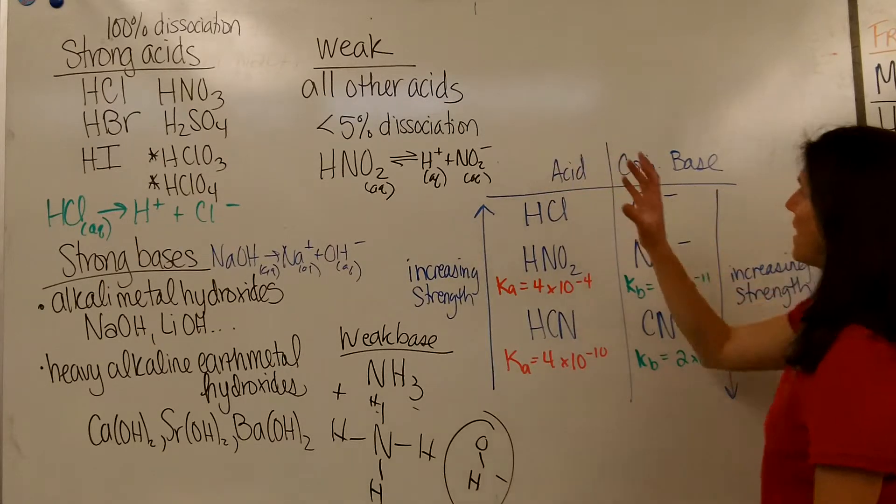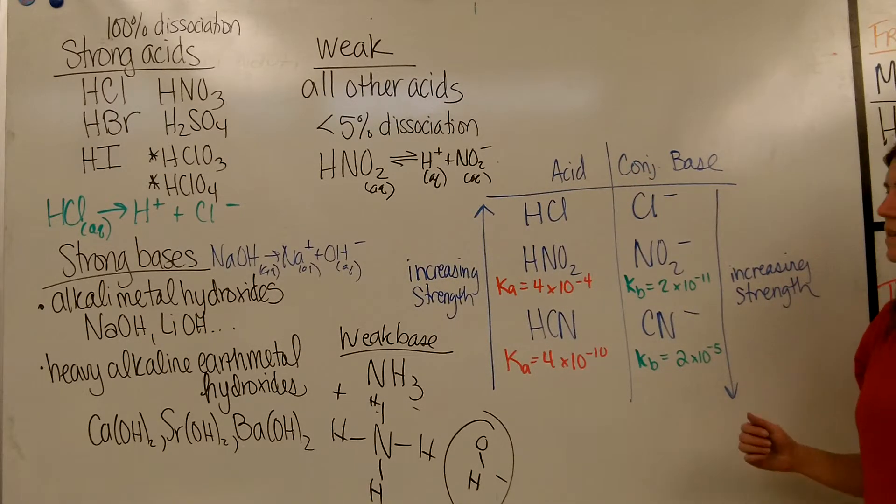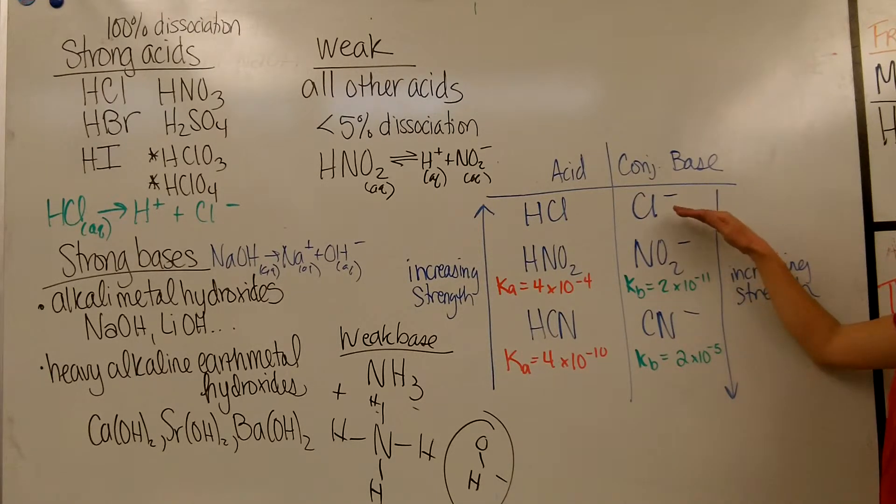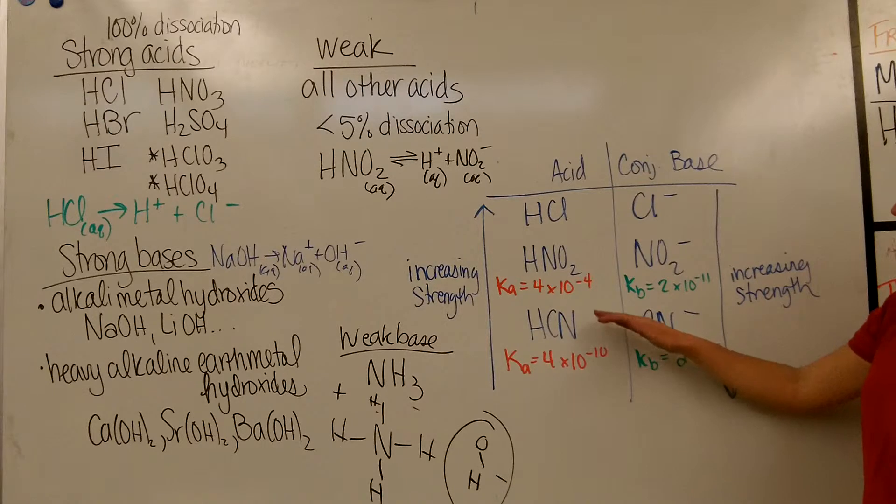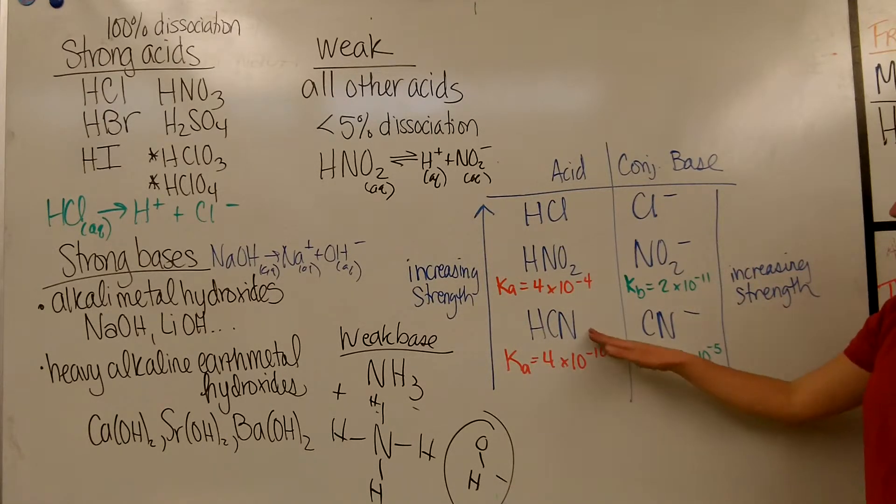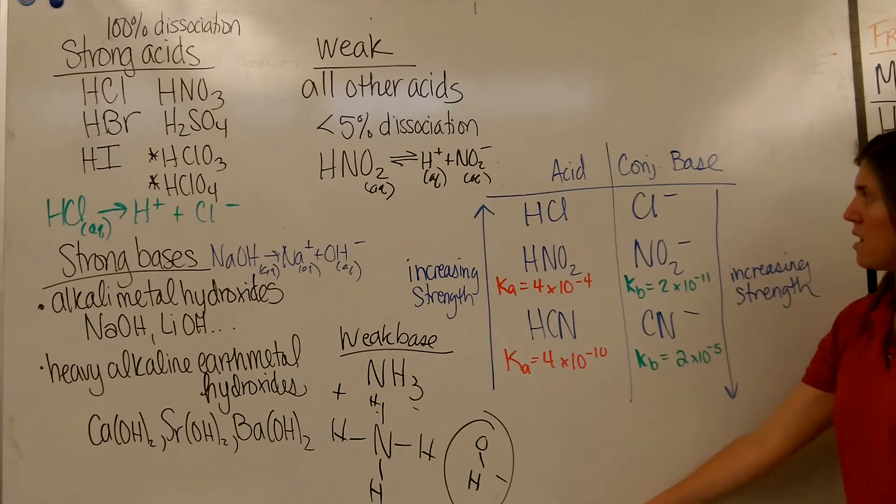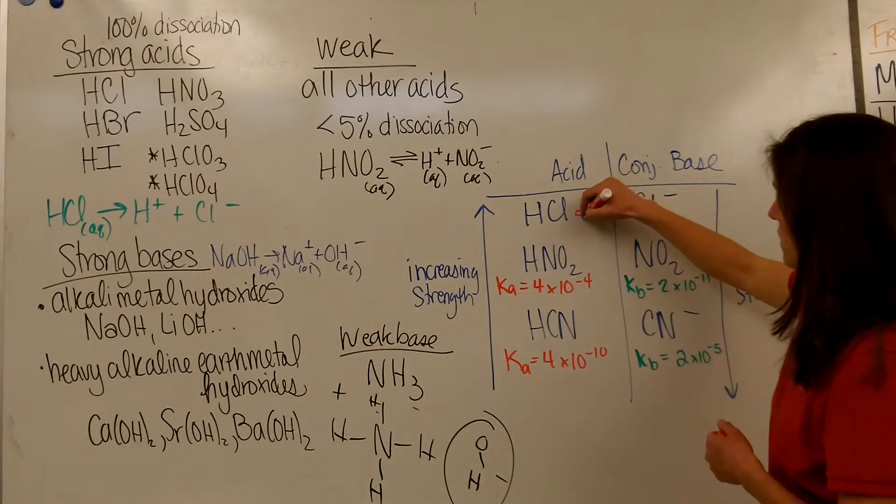And the conjugate base of HCl would just be the Cl- ion. HNO2 is a weak acid, its conjugate base is NO2-. HCN is a weak acid, CN- is its conjugate base.